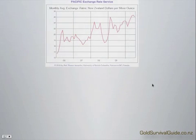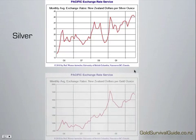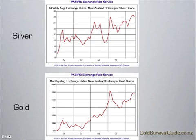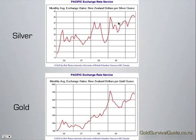Now we'll look at the next chart, which compares the price of silver against the price of gold over the same time period. You can see they're both in an uptrend, and silver is more volatile than gold — there are more ups and downs, and the ups and downs are bigger. The silver percentage price increase is actually lagging behind gold: gold has moved up from $800 to $1,200, a 50% increase, while silver has moved up from $14 to just under $20, so it hasn't moved up quite as much, although both are in the same kind of uptrend.